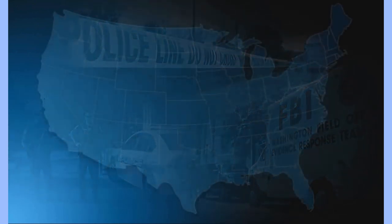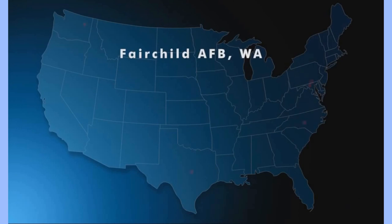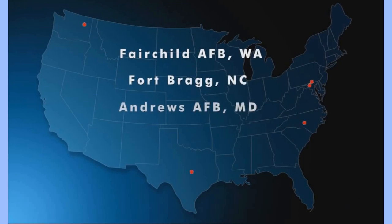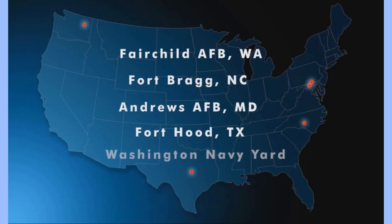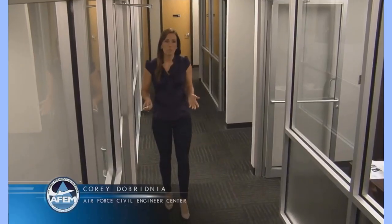In recent years, there have been shootings at Fairchild Air Force Base, Fort Bragg, Andrews Air Force Base, Fort Hood, and the Washington Navy Yard. Not being prepared to respond to an active shooter incident can have a disastrous outcome. The best way to prepare for an active shooter incident is to create an emergency action plan before it's needed. Developing a plan will help you become more familiar with your surroundings and help you in identifying any potential escape routes or areas that might provide protection should an active shooter incident occur.